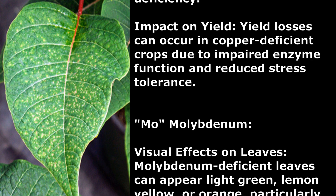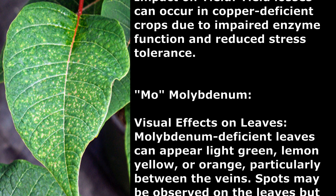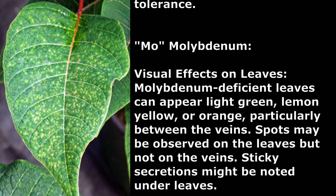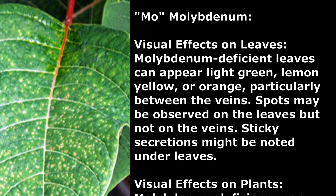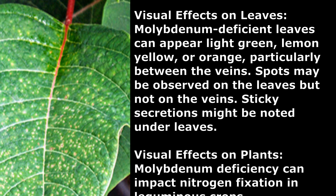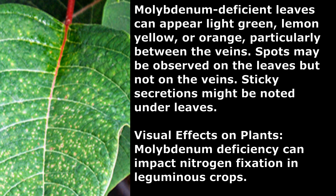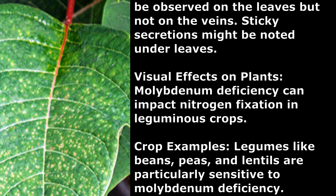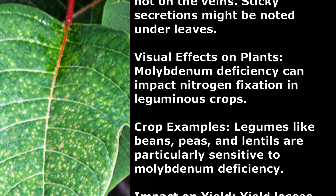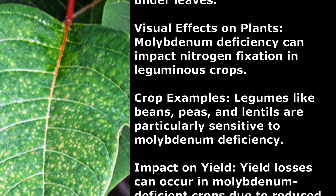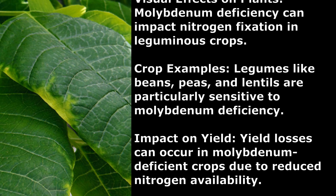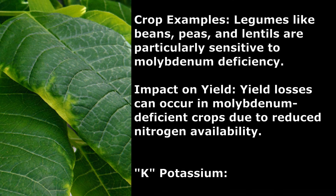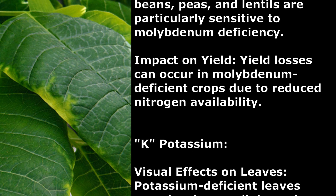Molybdenum. Visual Effects on Leaves: Molybdenum-deficient leaves can appear light green, lemon yellow, or orange, particularly between the veins. Spots may be observed on the leaves but not on the veins, and sticky secretions might be noted under leaves. Visual Effects on Plants: Molybdenum deficiency can impact nitrogen fixation in leguminous crops. Crop Examples: Legumes like beans, peas, and lentils are particularly sensitive to molybdenum deficiency. Impact on Yield: Yield losses can occur due to reduced nitrogen availability.